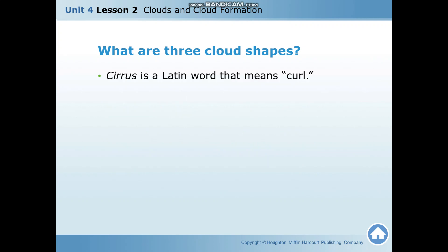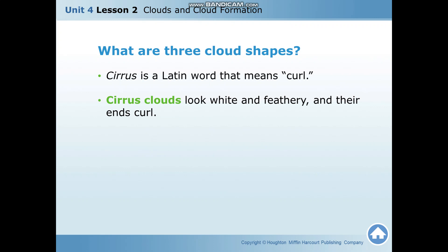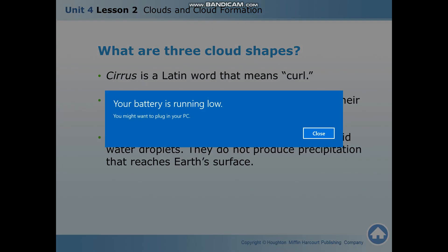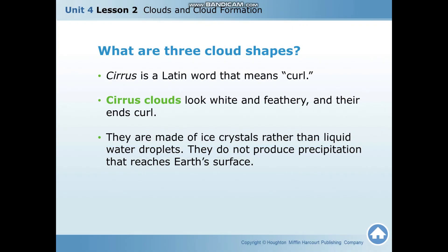Cirrus is a Latin word meaning 'curl.' Cirrus clouds look white and feathery and their ends curl, hence the name cirrus. They are made of ice crystals rather than liquid water droplets. Cirrus clouds do not produce precipitation. They are found at high altitude where temperatures are cold, which is why these clouds are made of ice crystals.